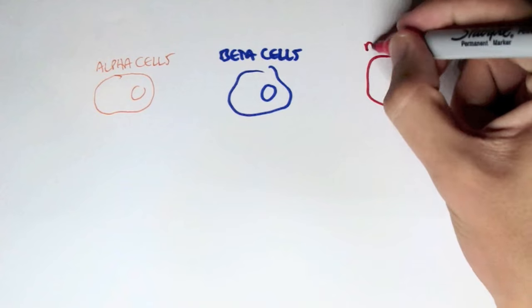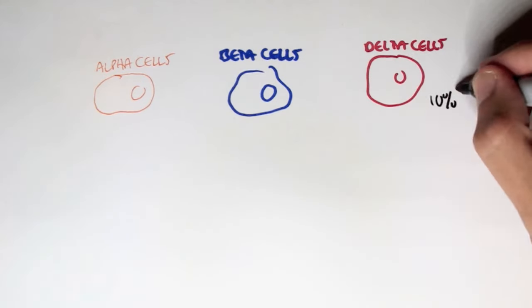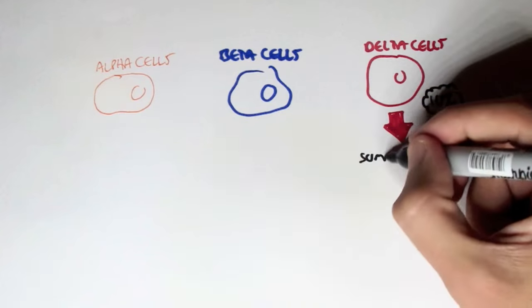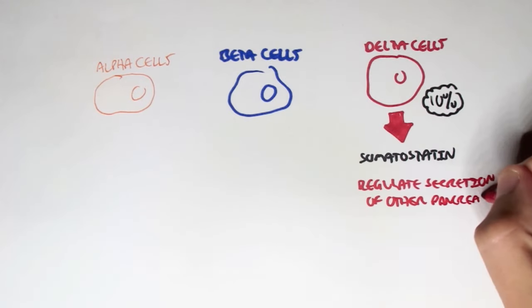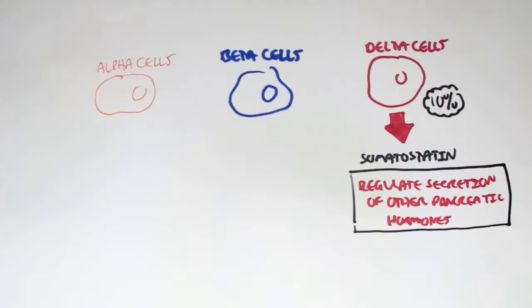So let's take a closer look at these three cells. So we have the alpha cells, we have the beta cells, and we have the delta cells. Now the delta cells make up about 10% of the hormone-producing cells within the islets of Langerhans. And the delta cells secrete somatostatin. And somatostatin regulates secretion of other pancreatic hormones. That is its role, its known role.